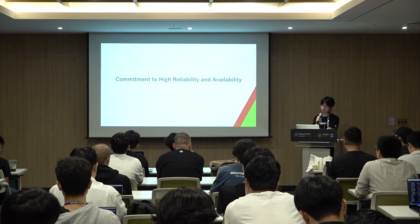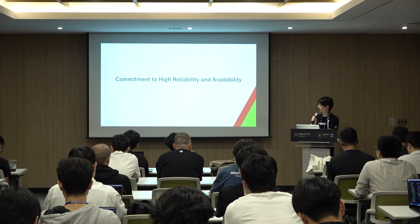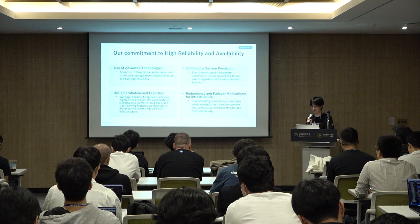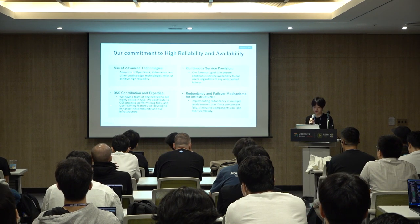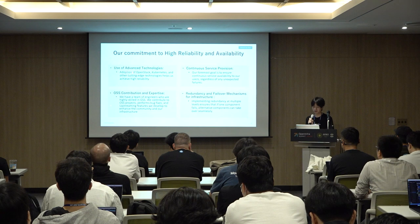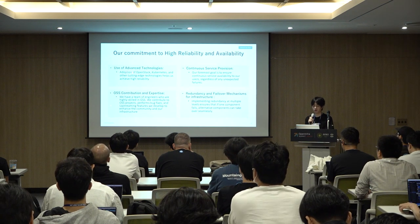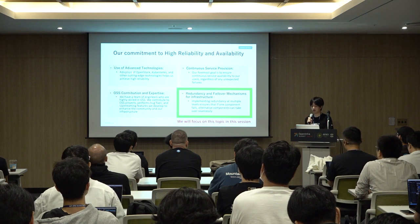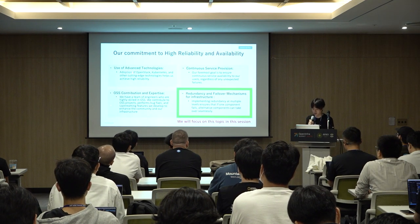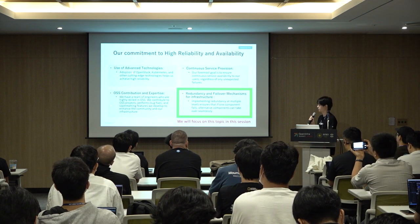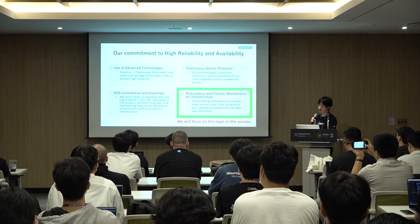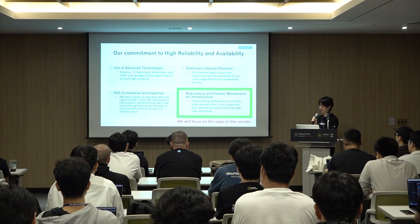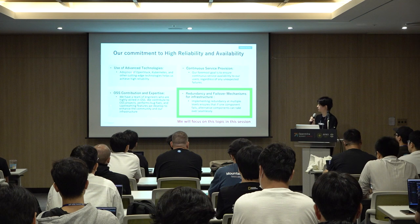Our commitment to high reliability and availability has four key items: use of advanced technology, continuous service provision, OSS contribution, and expertise. In this session we'll particularly focus on redundancy and failure mechanisms for infrastructure, applying redundancy at different levels to ensure that if one component fails, another can take over.